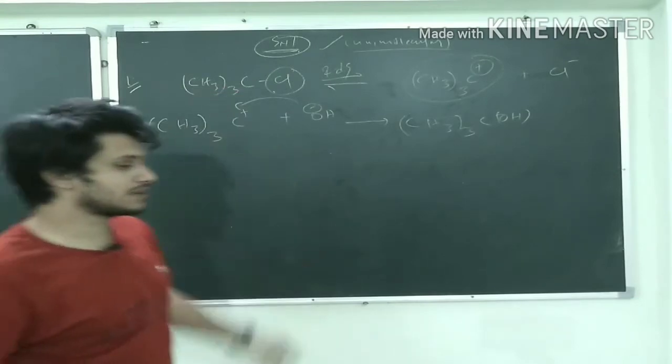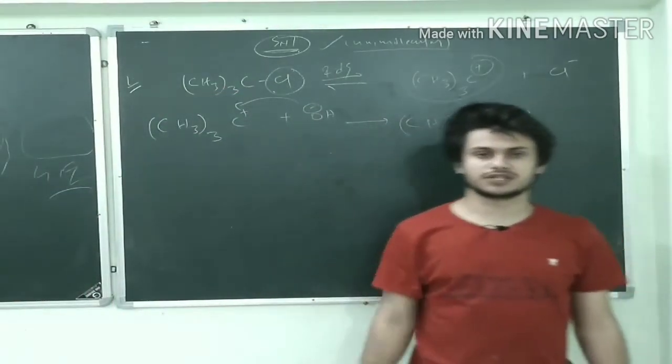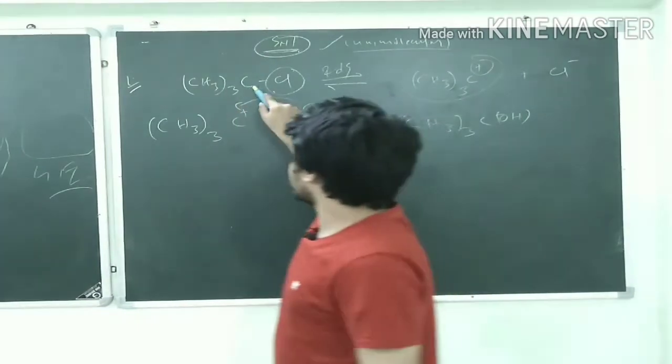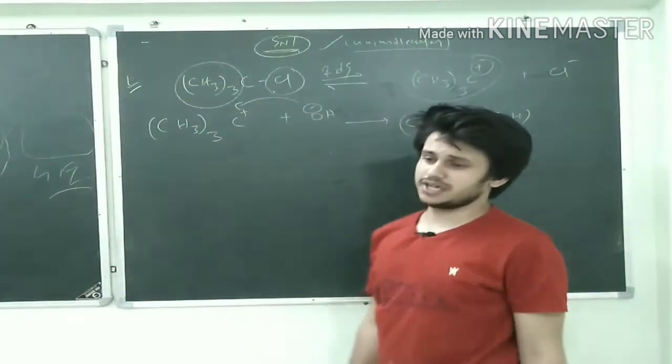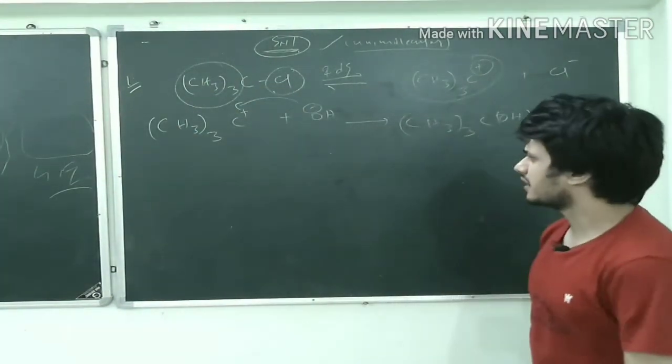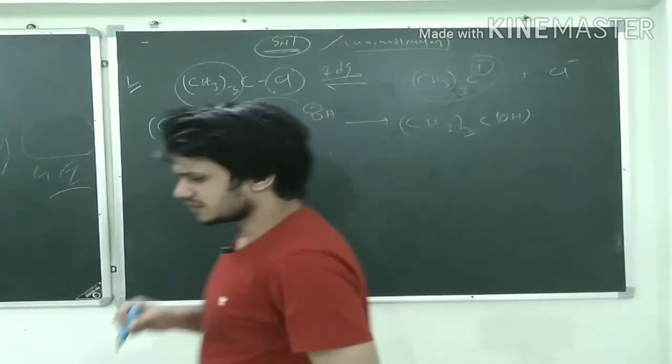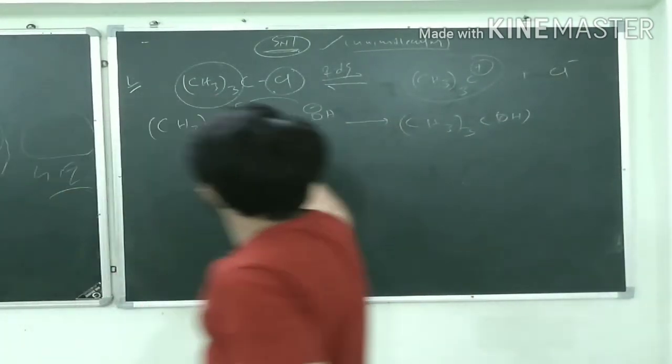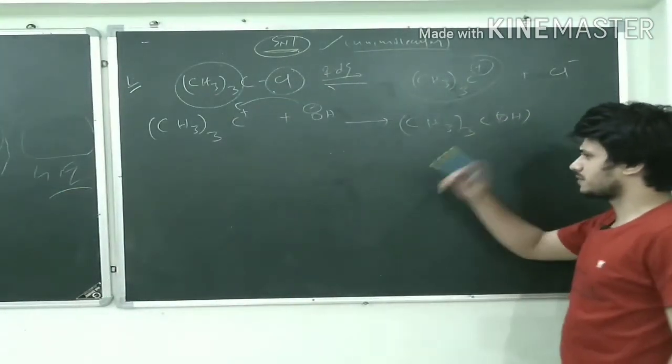SN2 reaction you can't do because I have told you that SN2 reaction is totally based on the steric factors. So if you have tertiary carbon, steric influence is more, so SN2 reaction will not be able to proceed. So you have to use this path.